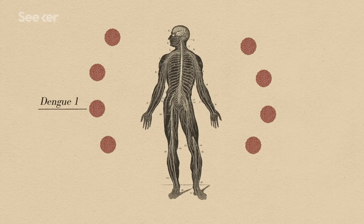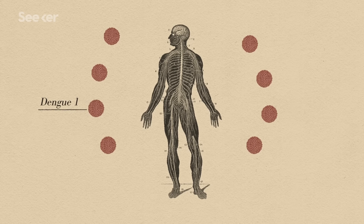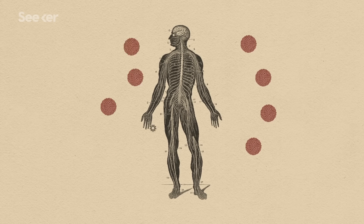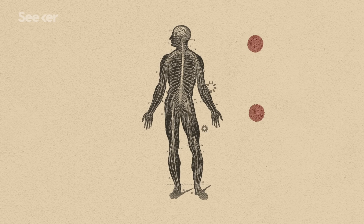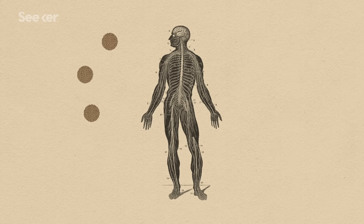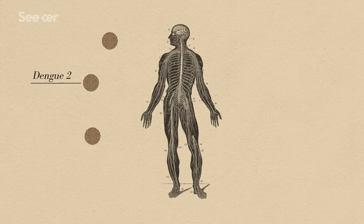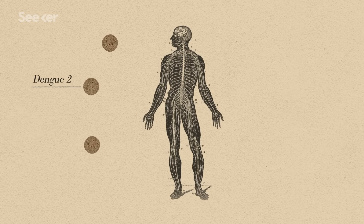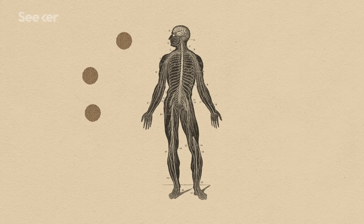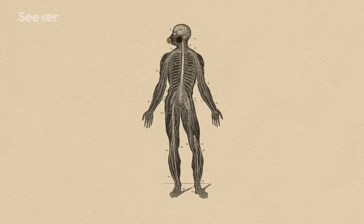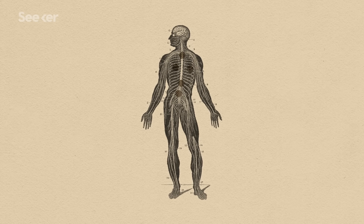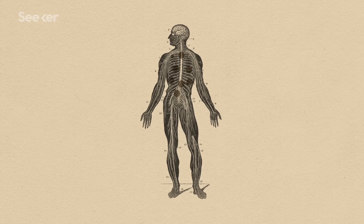Typically, once your immune system fights off a disease, it remembers it for future encounters—and usually that works. But with dengue, immunity to one serotype doesn't protect you against a different serotype and can in fact enhance the infection, making a second or even third encounter with the disease much worse.